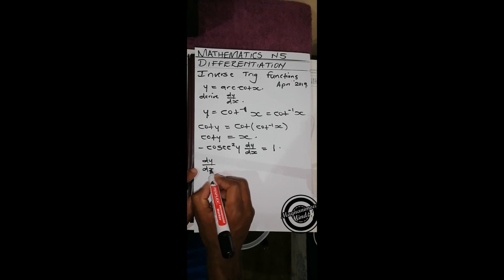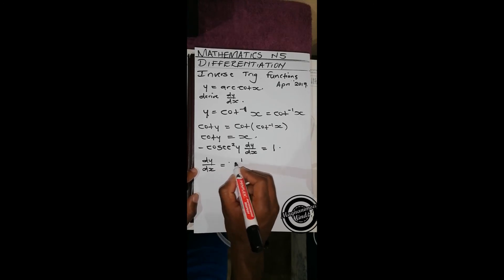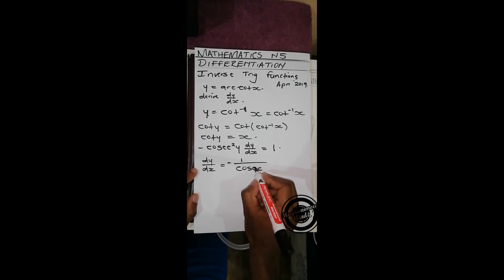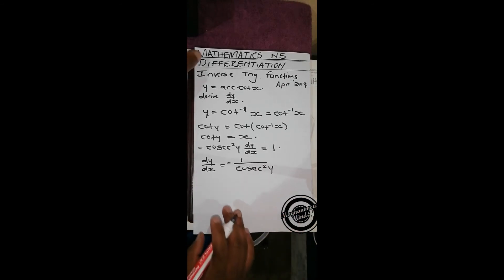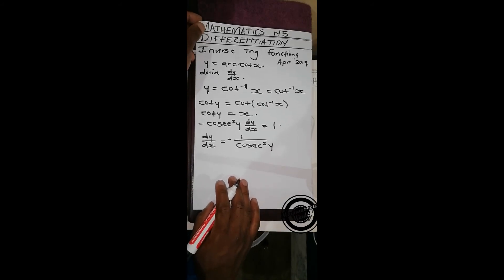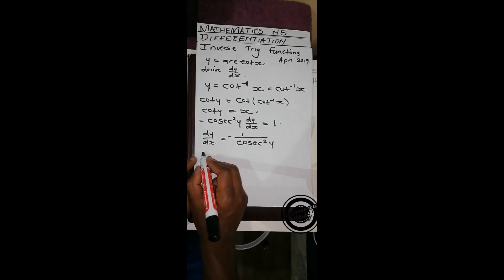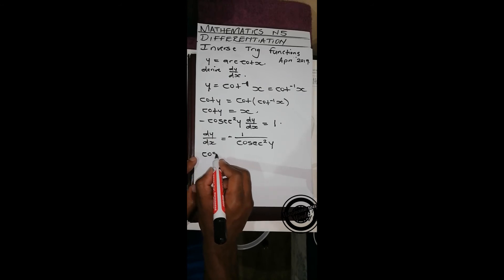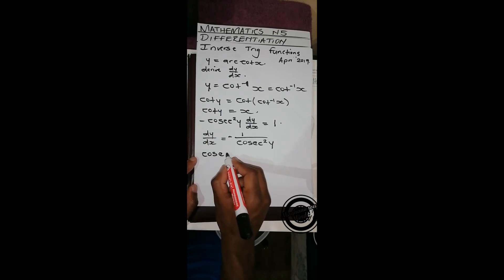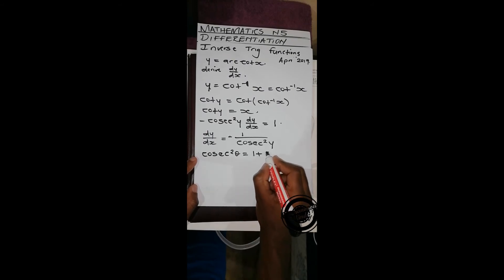Then we've got a trig identity which is cosec squared theta equals 1 plus cot squared theta.